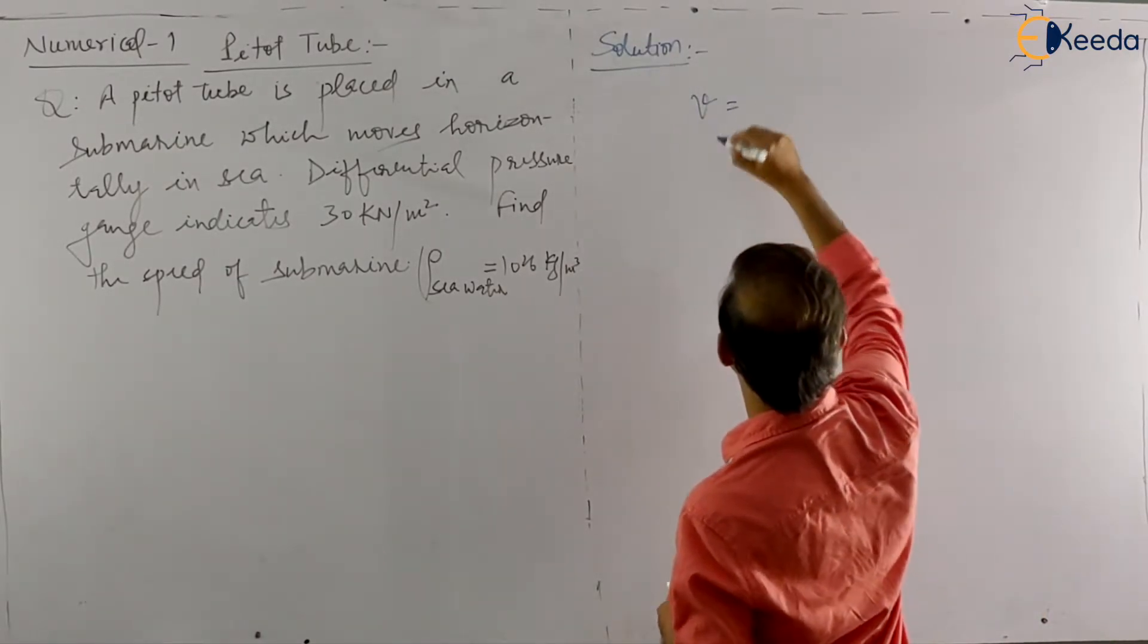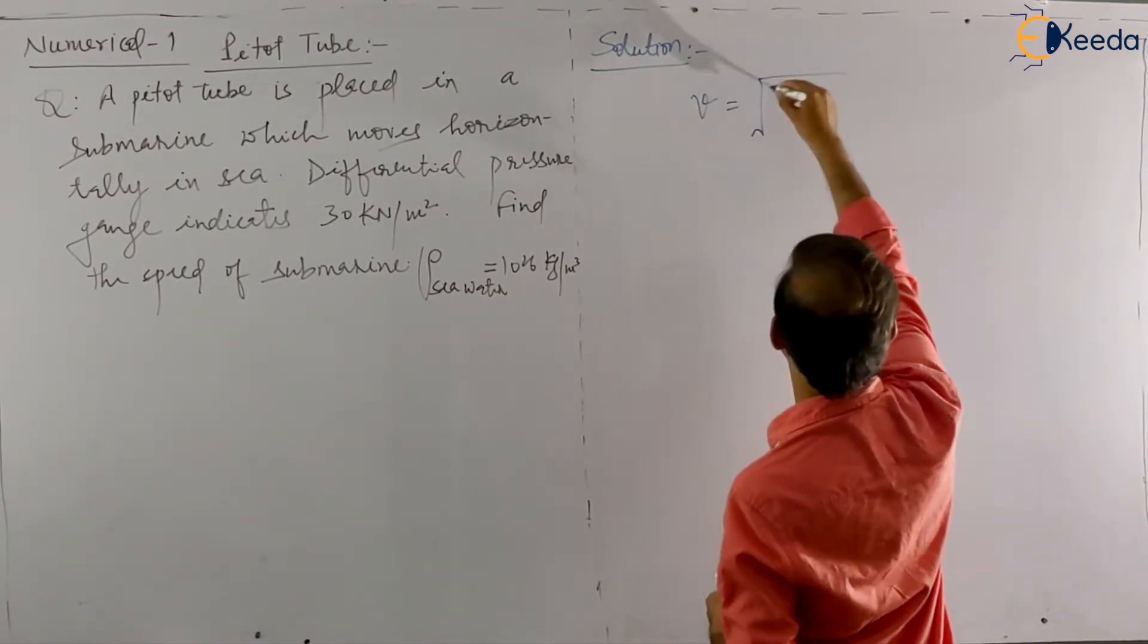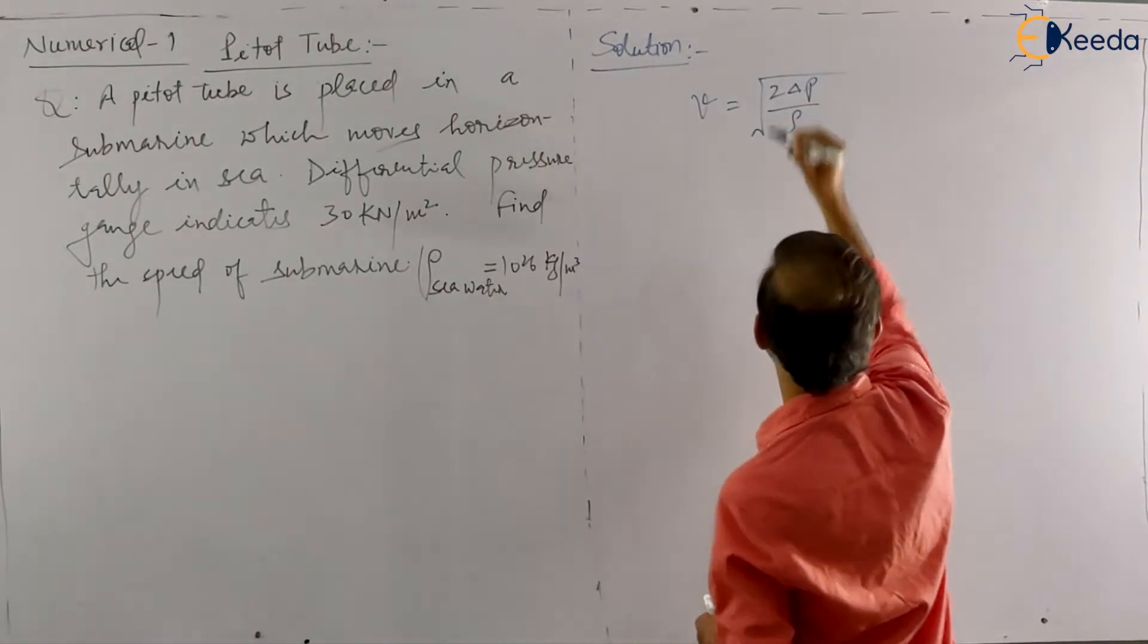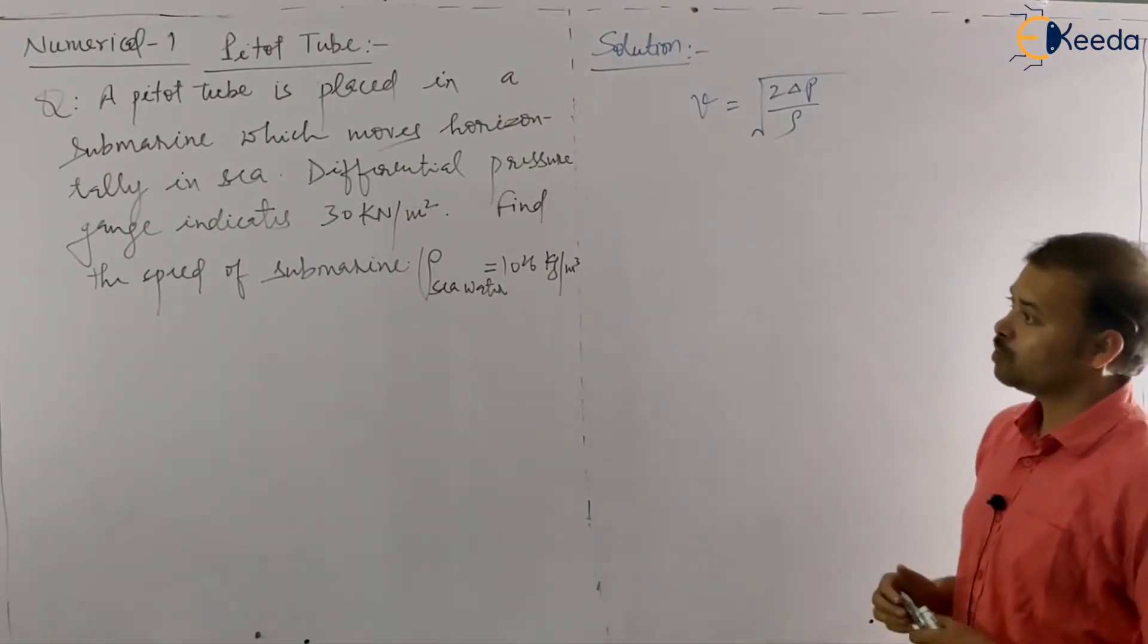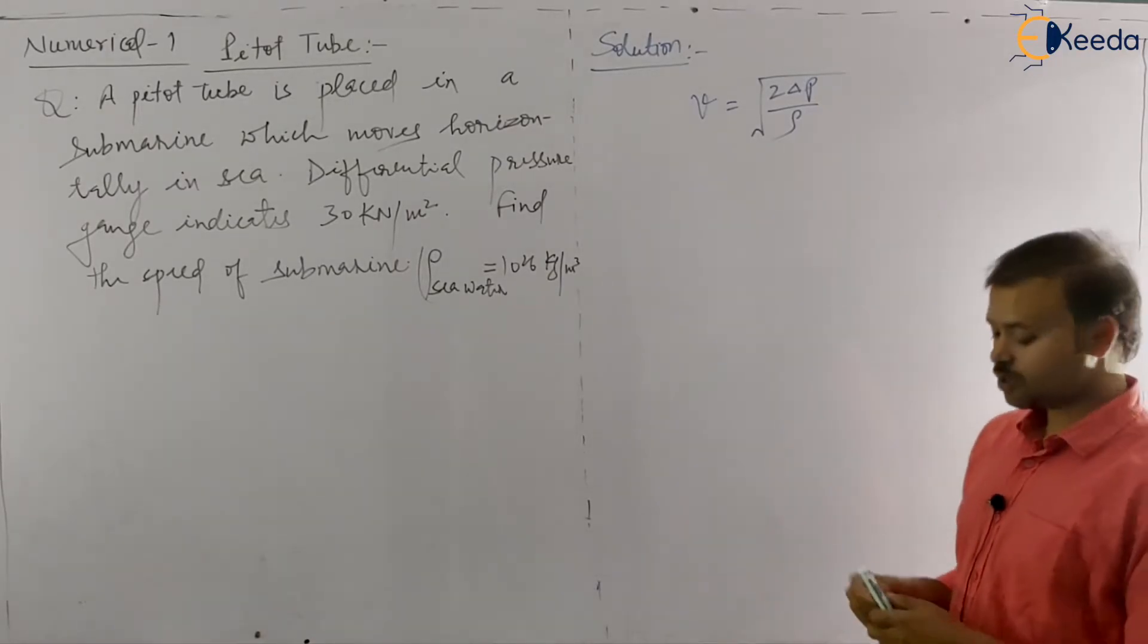V is nothing but under root 2 delta P by rho. 2 delta P by rho. Delta P is given in the question.